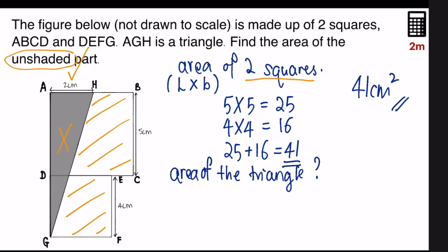Do we know the base and the height of the triangle? We can take base as two centimeters. But what about the height of the triangle? Well, the height of the triangle is the sum of BC and EF, which equals nine centimeters.